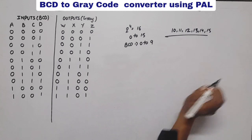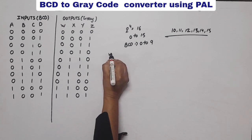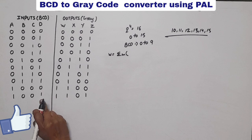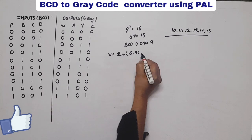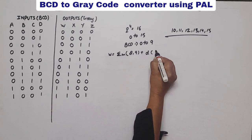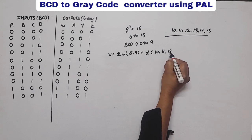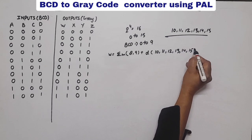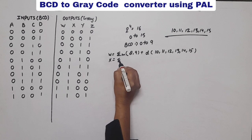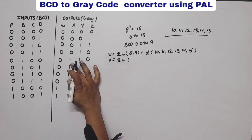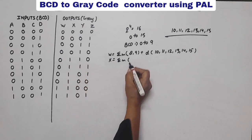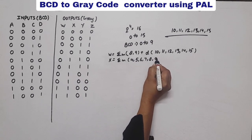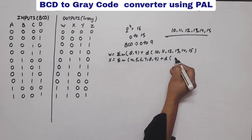Now we write the equations. First for W: summation of minterms 8 and 9, and don't cares are 10, 11, 12, 13, 14, and 15. Now for X: summation of minterms 4, 5, 6, 7, 8, 9, and don't cares are the same.